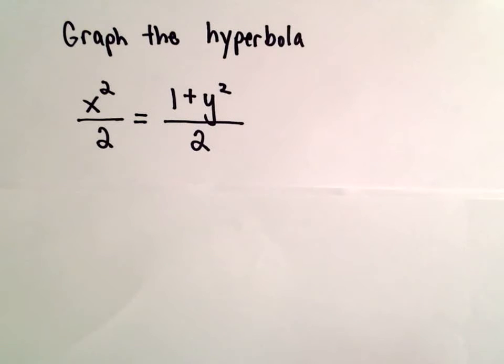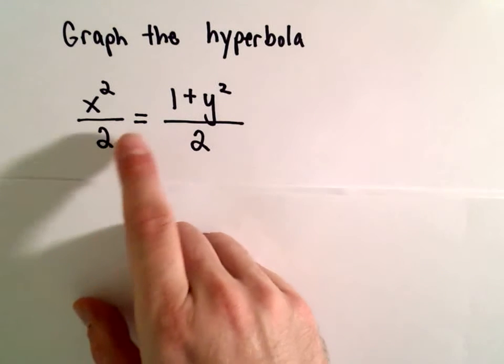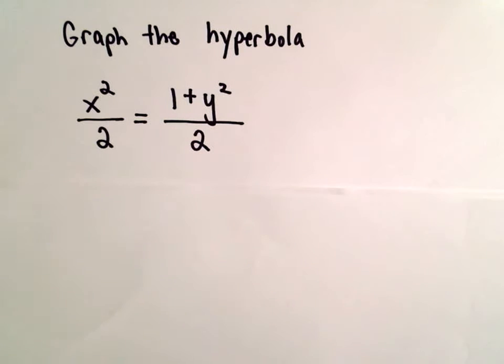Okay, in this example, we're going to graph the hyperbola x squared over 2 equals 1 plus y squared over 2.